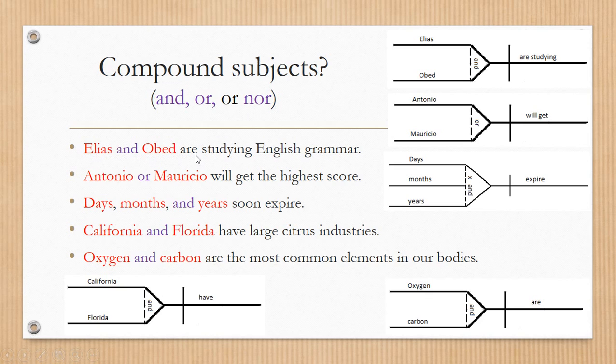Elias and Obed are studying English grammar. We have here the subjects or the compound subject, two guys doing one thing. Okay, how is the diagramming for this going to be? Elias, since we have a compound subject, two people, two guys, we're going to need two lines. The first line is going to be for the first one mentioned in the sentence. Elias.